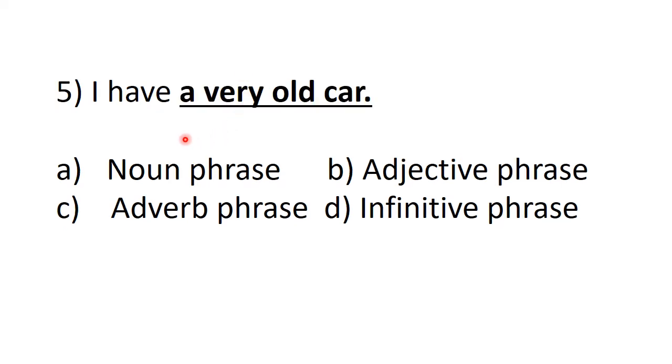The last one is: I have a very old car. Now a very old car is an underlined phrase here. You have the same four options: noun phrase, adjective, adverb or infinitive phrase. I hope you will be able to do it.